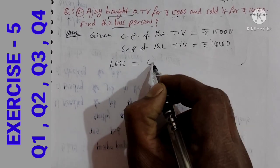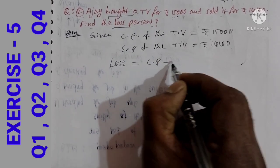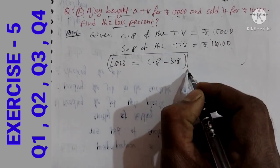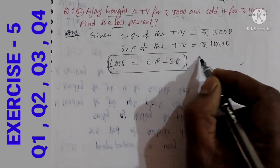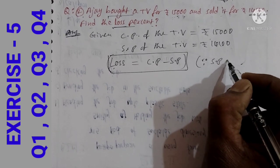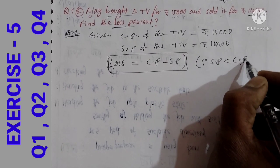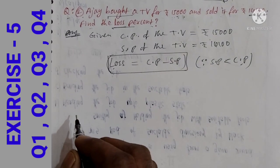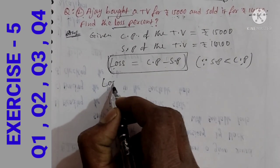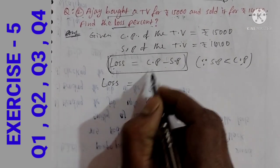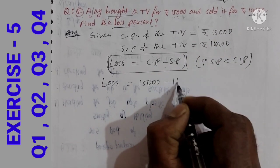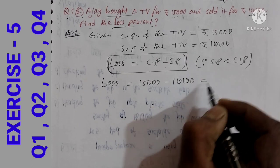Loss is equal to cost price minus selling price. Loss = 15,000 minus 14,100.